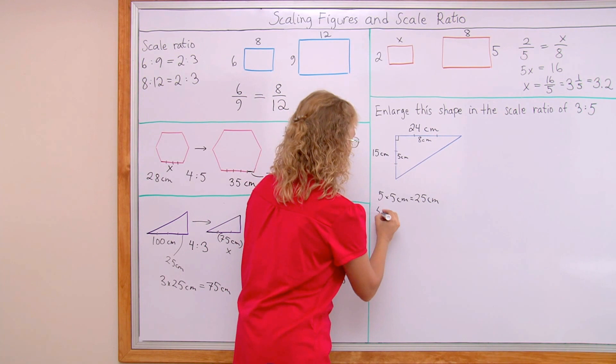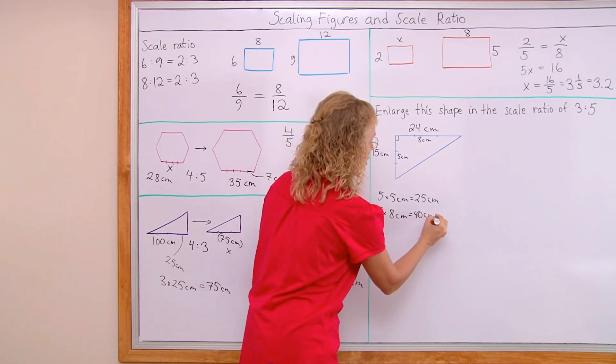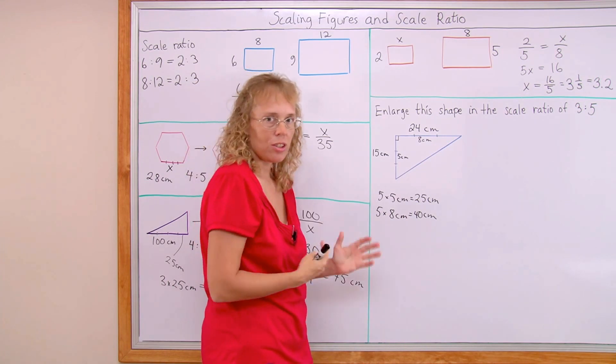And then in the enlarged triangle, I take 5 of such parts, 5 times 8 centimeters, so I get 40 centimeters. So now I have my two side lengths, and I can draw the triangle.